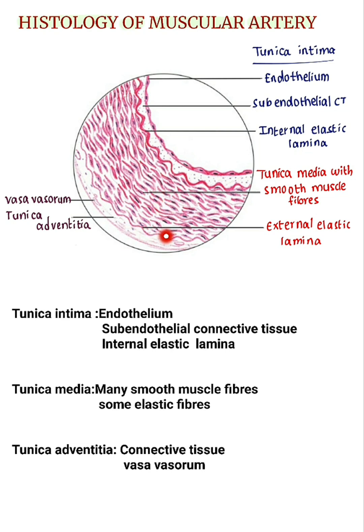The external elastic lamina is present at the junction of tunica media and tunica adventitia. Tunica adventitia consists of connective tissue containing collagen fibers with several elastic fibers. It shows vasa vasorum — blood vessels in the tunica adventitia are called vasa vasorum. The tunica adventitia of the muscular artery is relatively thicker than that of elastic artery.